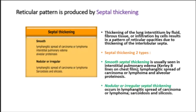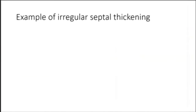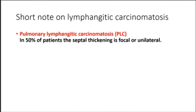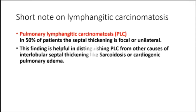Nodular or irregular septal thickening occurs in lymphangitic spread of carcinoma or lymphoma, sarcoidosis, and silicosis. In lymphangitic carcinomatosis (PLC), in 50% of patients the septal thickening is focal or unilateral — a finding helpful in distinguishing PLC from other causes like sarcoidosis or cardiogenic pulmonary edema. Hilar lymphadenopathy is visible in 50%, and there is usually a history of adenocarcinoma.